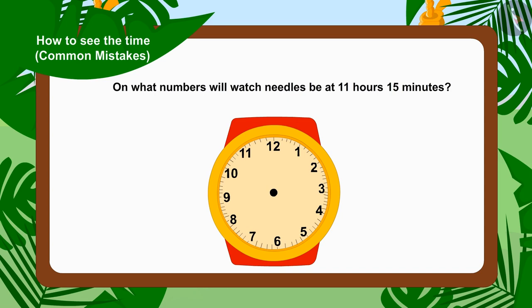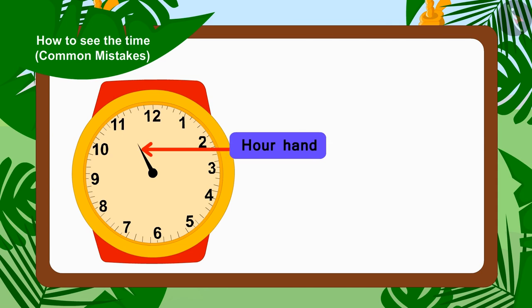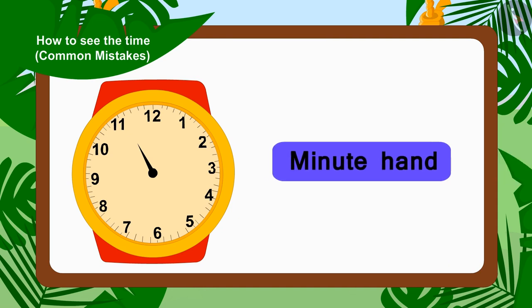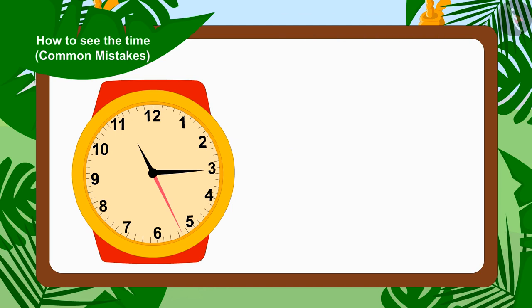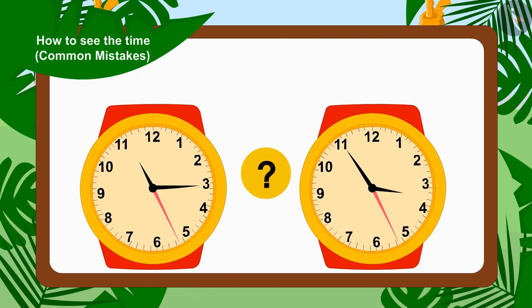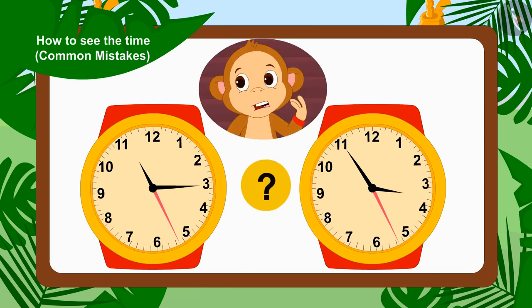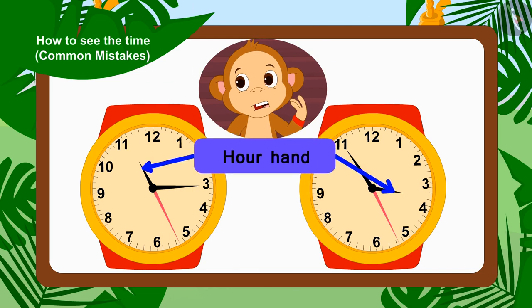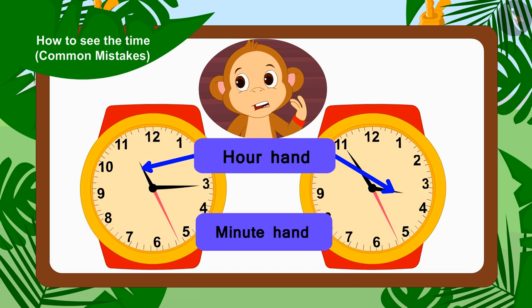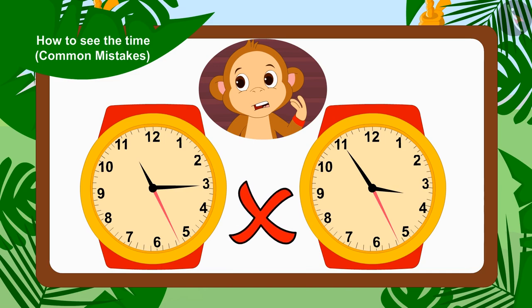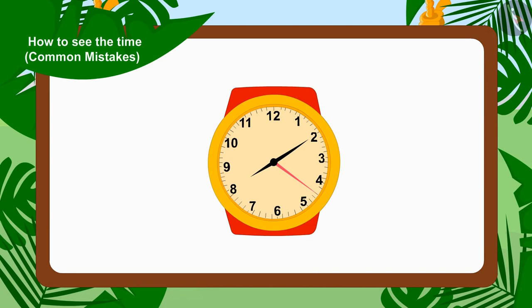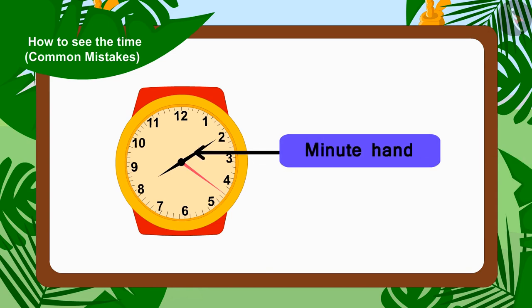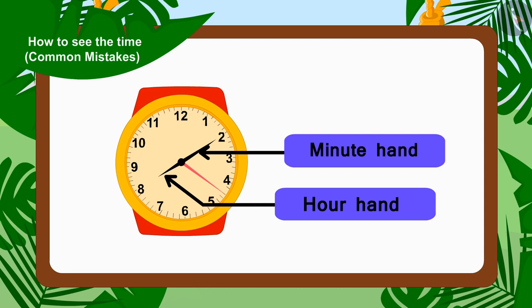That's correct. At 11 hours 15 minutes, the hour needle is between 11 and 12, and the minute needle will be at 15 divided by 5, that is number 3. Now, by looking at these two watches, Babban replaced the hour needle with the minute needle and the minute needle with the hour needle to read the time. So Babban saw the wrong time. Children, keep in mind: whenever you look at the time in the watch, identify the minute and hour needle properly and then read the time.